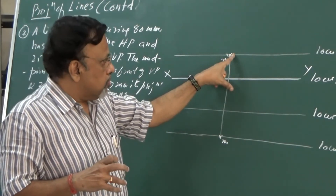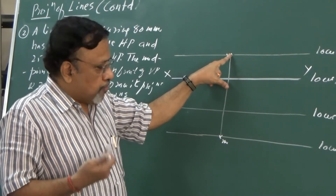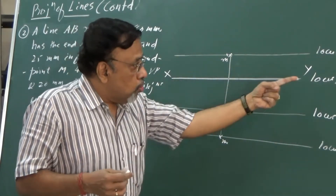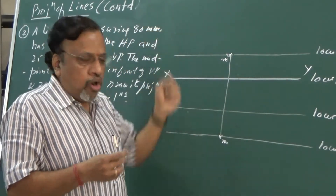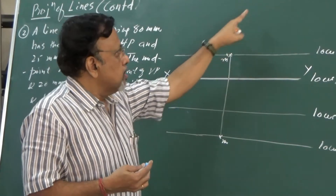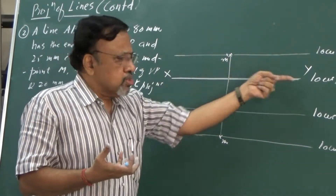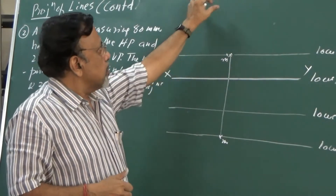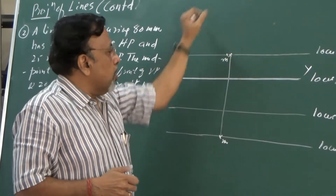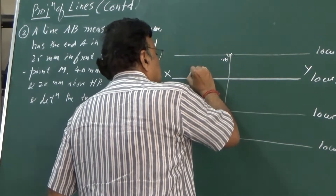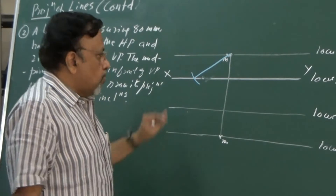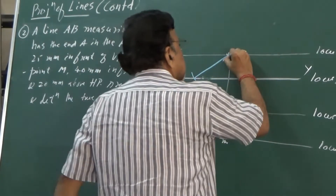Since I know TL = 80mm and I know the locus of A in the front view, I will take half of TL on one side and half on the other side from the midpoint. No angle is needed because I know the locus of A-dash. So I take the compass with M-dash as center and radius equal to 40mm and draw an arc. That half is one side, and the other half extends to the other side.